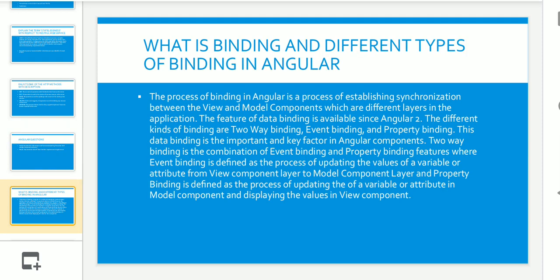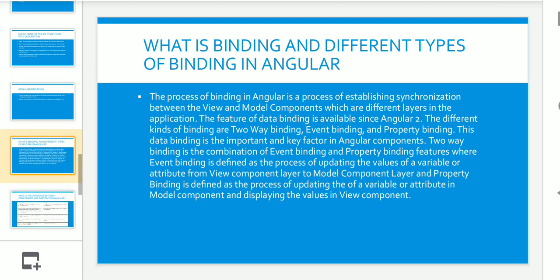The next question was: what is binding and what are the different types of binding in Angular? There are different kinds of binding: two-way binding, event binding, and property binding. A detailed explanation is provided in the slide — please halt the video and go through it if you are not already familiar with these concepts.